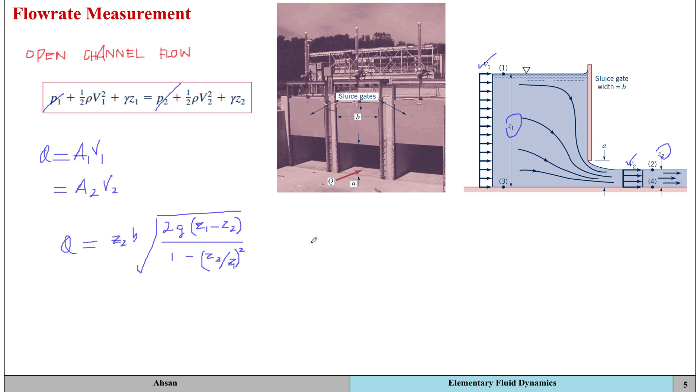Then we will apply this limit where z1 is much larger than z2. We can simplify this equation and write it in terms of Q equals z2*B*sqrt(2g*z1).